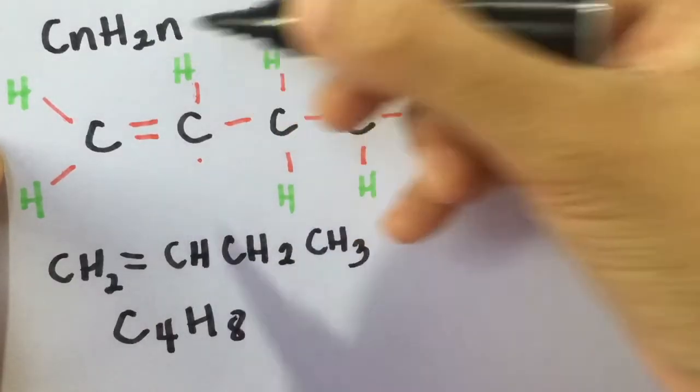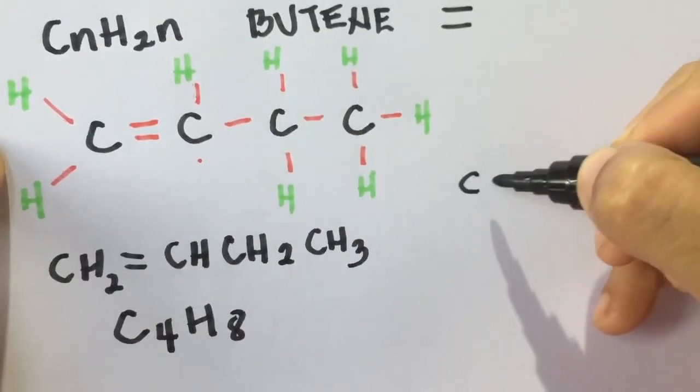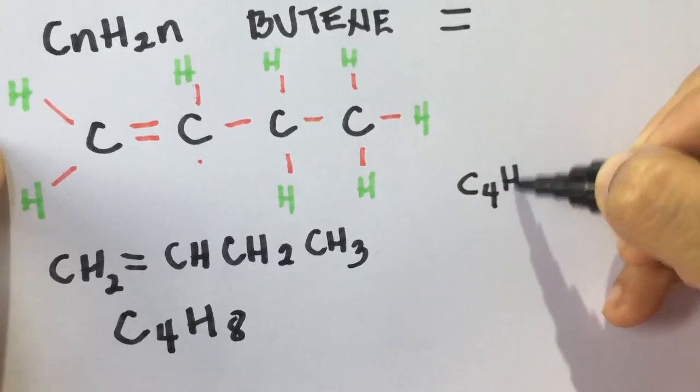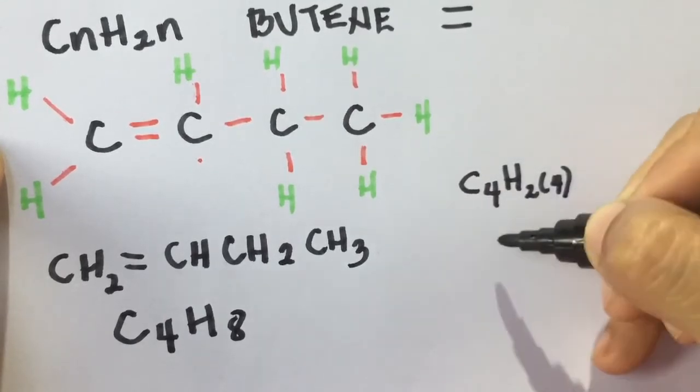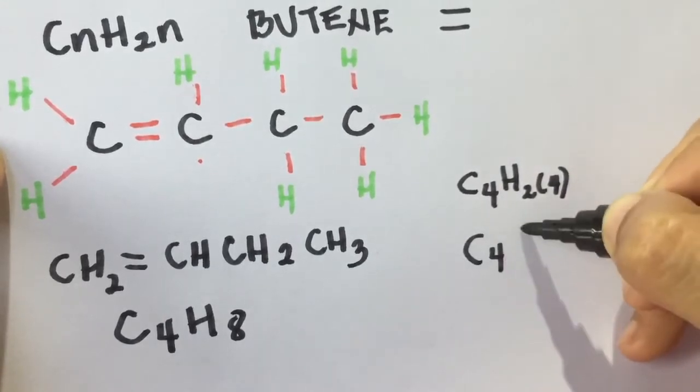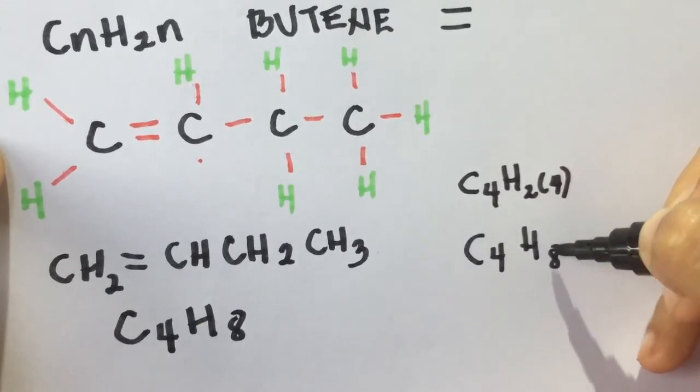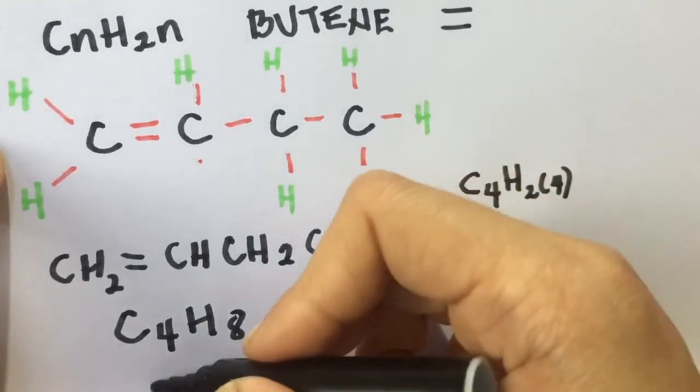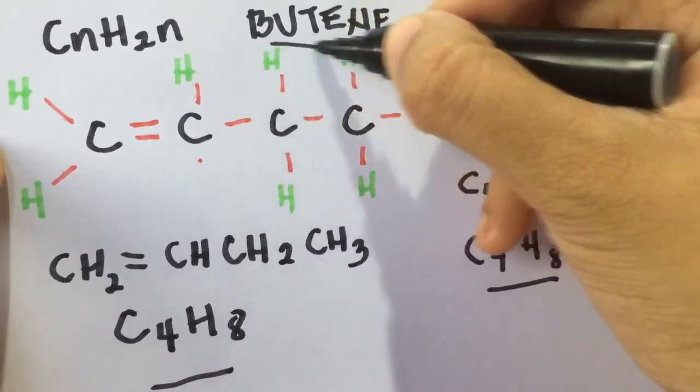C4H8. So I'll try to check the general formula of an alkene. C4H2 multiplied by four. And then we have here C4H2 eight. And that is butene, C4H8 butene.